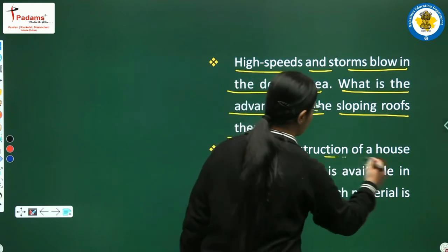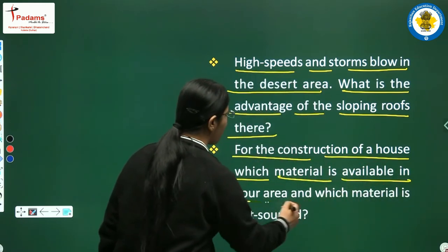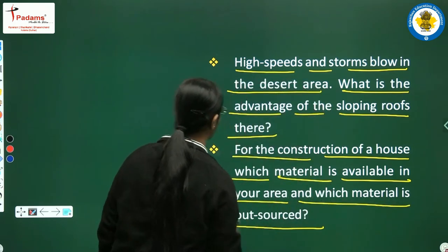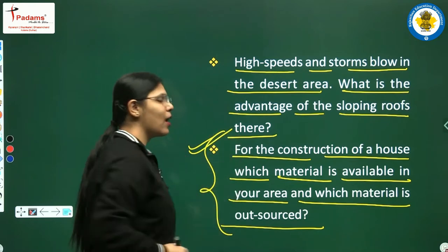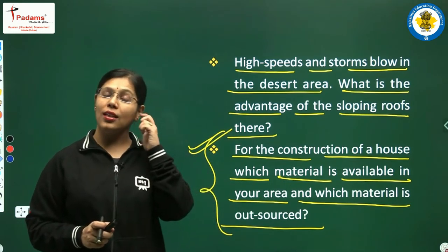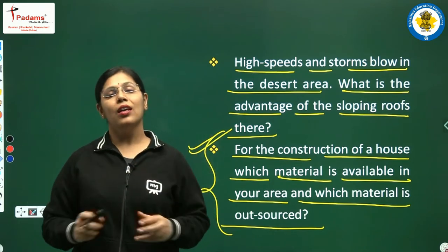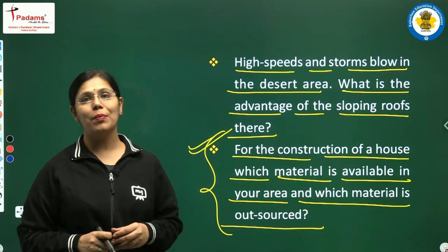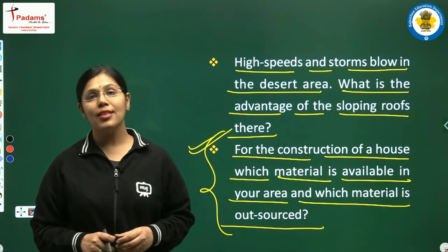Third: for the construction of a house, which material is available in your area and which material is outsourced? Aapke aas-paas ghar banane ke liye kaun-kaun si nirman samagri uplabdh hai — yaani aapke kshetra mein kaun-kaun si nirman samagri aasani se mil jaati hai — aur kaun si samagri bahar se mangani padti hai?